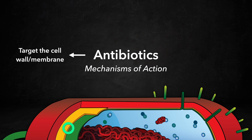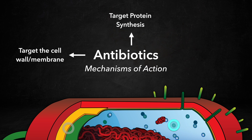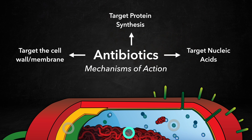The first group includes antibiotics that target the cell wall and membrane. The second group includes inhibitors of protein synthesis. And the third group includes antibiotics that target nucleic acids. We will go over each of these three groups, and at the end of the lecture there will be a flashcard that contains all the relevant information from this video.